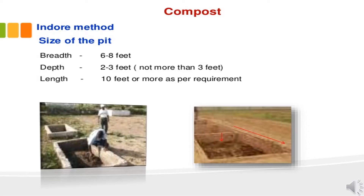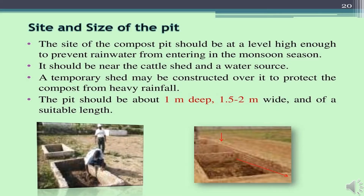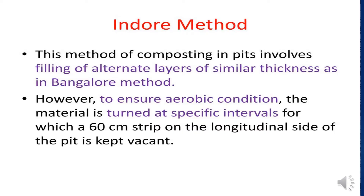The pit dimensions for the Indore method are: width 6 to 8 feet, depth 2 to 3 feet, and length 10 feet. The site of the compost pit should be at a level high enough to prevent rainwater from entering during monsoon season, near the cattle shed and a water source. A temporary shed may be constructed over it to protect from heavy rainfall. The pits should be optimum standard sizes — 1 meter deep, 1.5 to 2 meters wide, and of suitable length. To ensure aerobic conditions, the material is turned at specific intervals, for which a 60 cm strip on the longitudinal side of the pit is kept vacant to help with turning.